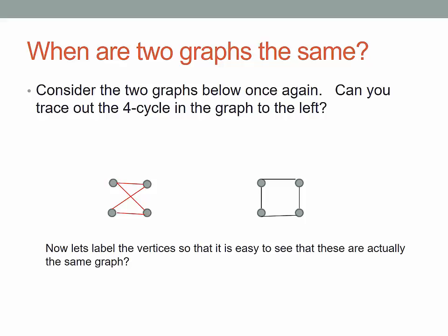But based on our previous discussion, that means we should be able to label the vertices so that they have the same neighbors in both graphs. On the left, we can simply follow the tracing out of the cycle and label our vertices as we encounter them. And we see that this is a labeling that corresponds to the cycle on the right.